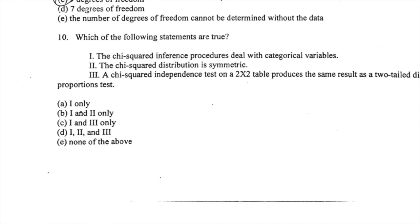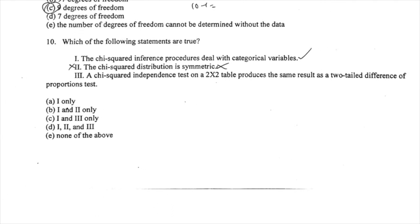Number ten: The chi-squared inference procedures deal with categorical variables — absolutely true. The chi-squared distribution is symmetric — false, it's skewed right as you can see in the chart. A chi-squared test of independence on a 2×2 table produces the same results as a two-tailed difference of proportions test — actually false; it's the homogeneity test that corresponds to two-prop Z. So the only true statement is number one. Answer A.